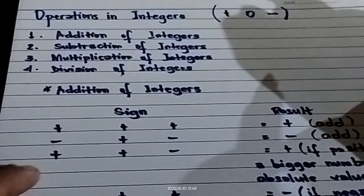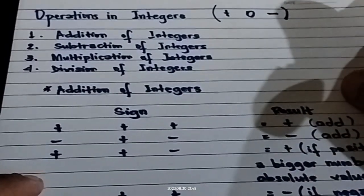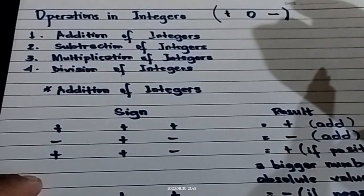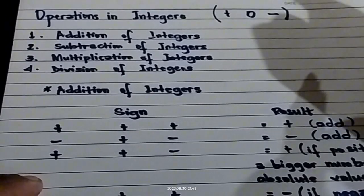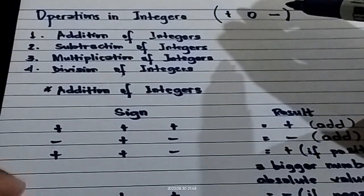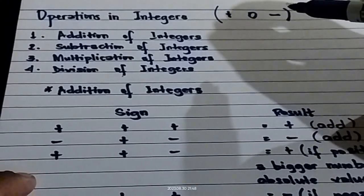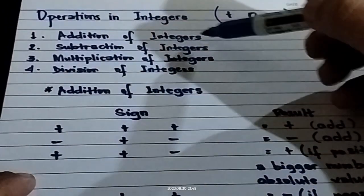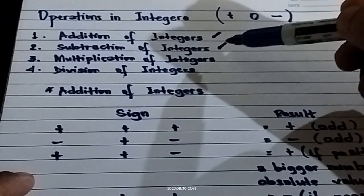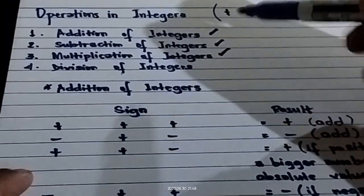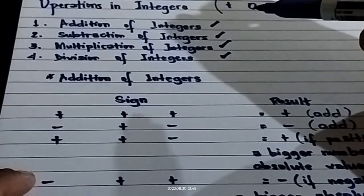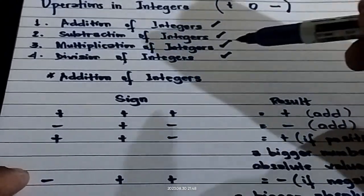Blessed day to everyone. Let us now discuss the operations in integers. We know that integers are composed of positive numbers, zero, and the negative numbers. The operations we are going to discuss are: first, the addition of integers, then the subtraction of integers, the multiplication of integers, and the division of integers. In our first lesson, I'm going to discuss the addition of integers.